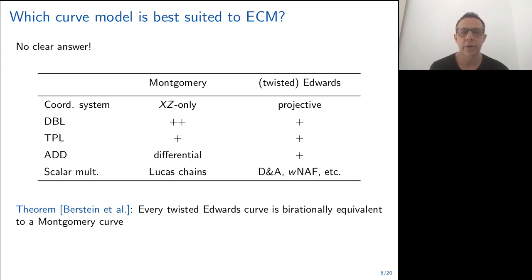On the other hand, Edwards curves have very good arithmetic, the doubling, tripling and addition. You can use the algorithm of your choice for scalar multiplication, and the best choice between the two is not clear. In this work, we used a theorem that says that every Twisted Edwards curve is birationally equivalent to a Montgomery curve. So we try to use the best of both worlds.